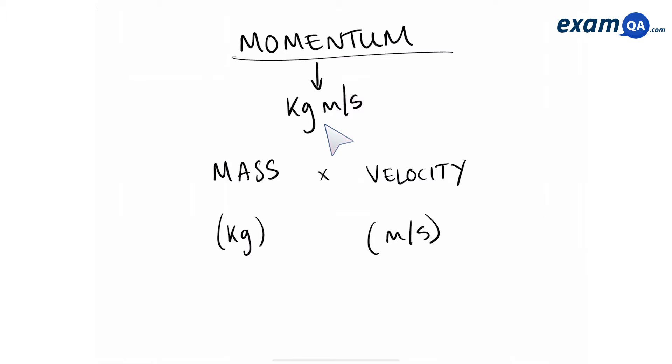Let's say you have an object that's not moving. It will have mass but no velocity, and therefore it will not have any momentum. So to have momentum you need to have both mass and velocity.